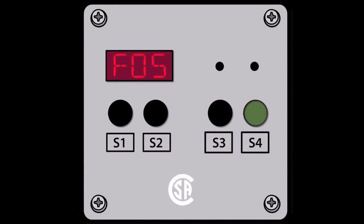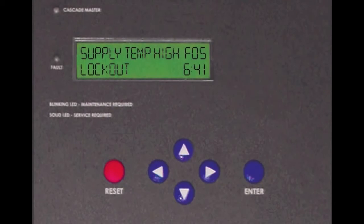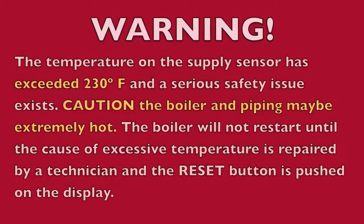If you are getting an F05 code in the display, this indicates that the supply temperature has been exceeded above its safety limit of 230 degrees F. Be careful before proceeding as the piping and the boiler may be extremely hot.